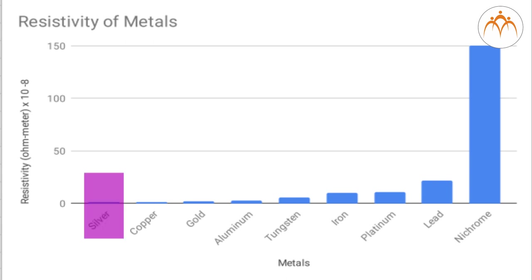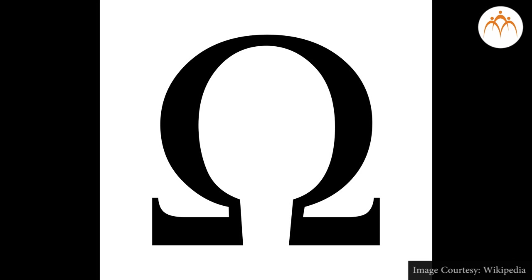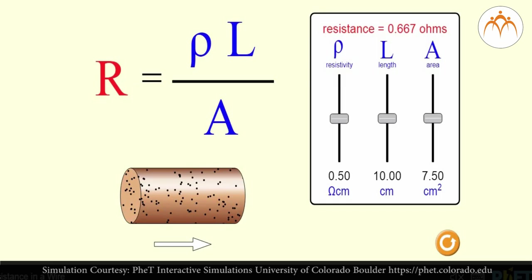Resistance is a numerical quantity that can be measured and expressed mathematically. The standard metric unit of resistance is the ohm, represented by the Greek letter omega. As per the equation, the resistance of a wire is directly proportional to the length of the wire and inversely proportional to the cross-sectional area of the wire. If we keep the length and the area of conductor constant, resistance of the conductor is proportional to resistivity ρ.